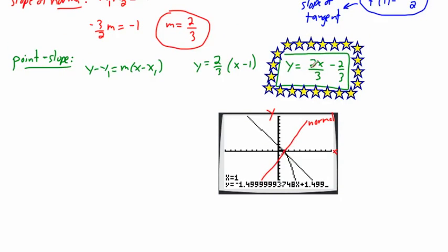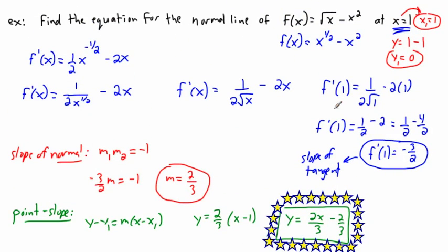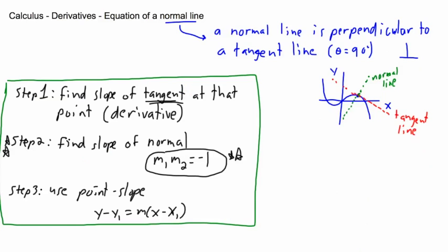It makes sense that the slope of the normal is positive 2/3 since the tangent slope is negative. The y-intercept of −2/3 also checks out. To summarize: find the slope of the tangent via the derivative, use m1·m2 = −1 to get the normal slope, then apply point-slope with the known x and y coordinates.